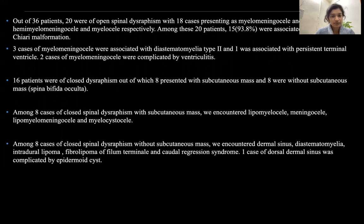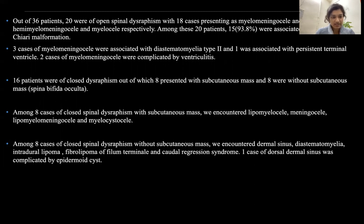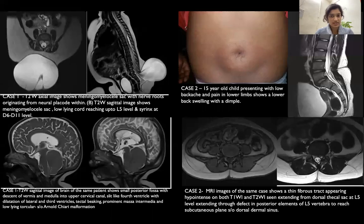Out of 16 patients of closed spinal dysraphism, eight had a subcutaneous mass and eight were without subcutaneous mass, that is spina bifida occulta. Among the eight cases with subcutaneous mass, we encountered lipomyelocele, meningocele, lipomyelomeningocele, and myelocystocele. Among the eight cases of spina bifida occulta, we encountered dermal sinus, diastematomyelia, intradural lipoma, fibrolipoma of the filum terminale, and caudal regression syndrome. One case of dorsal dermal sinus was complicated by an epidermoid cyst.